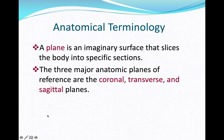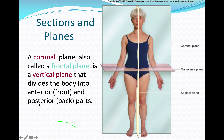A plane is an imaginary surface that slices the body into specific sections. There are three major planes: coronal, transverse, and sagittal. The coronal plane, also called the frontal plane, is a vertical plane that divides the body into front and back — anterior and posterior parts.